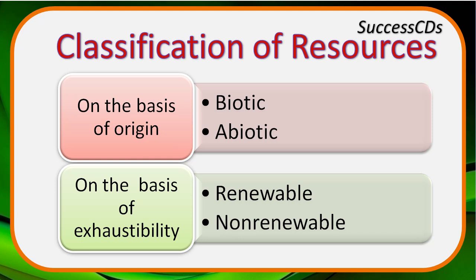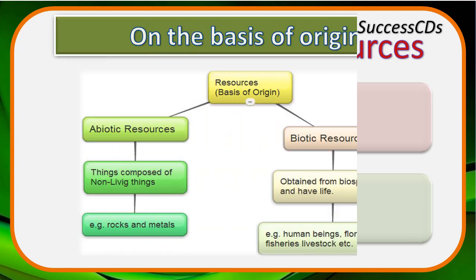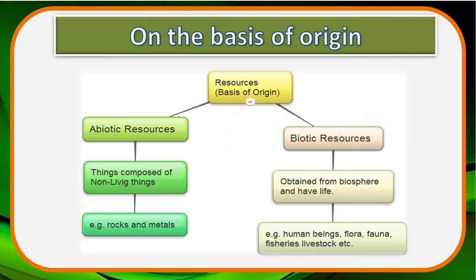Now let's discuss the classification of resources. Classification is done on four bases: on the basis of origin, exhaustibility, ownership, and status of development. On the basis of origin, resources are broadly classified into two categories: abiotic and biotic. Abiotic resources are those obtained from non-living things, like rocks, metals, soil, land, air, and water.